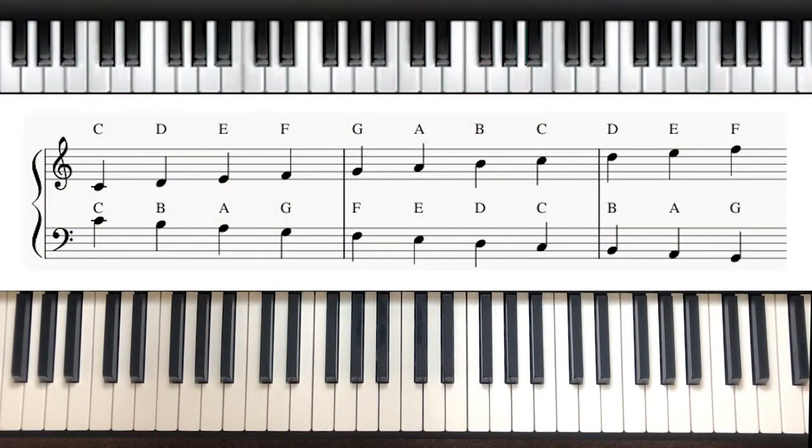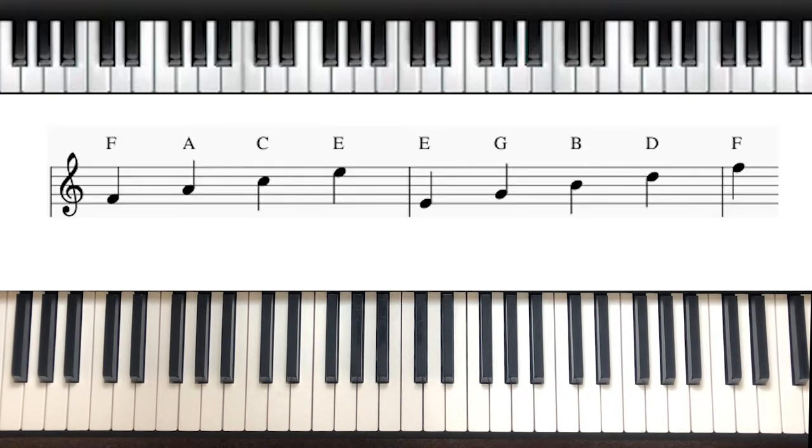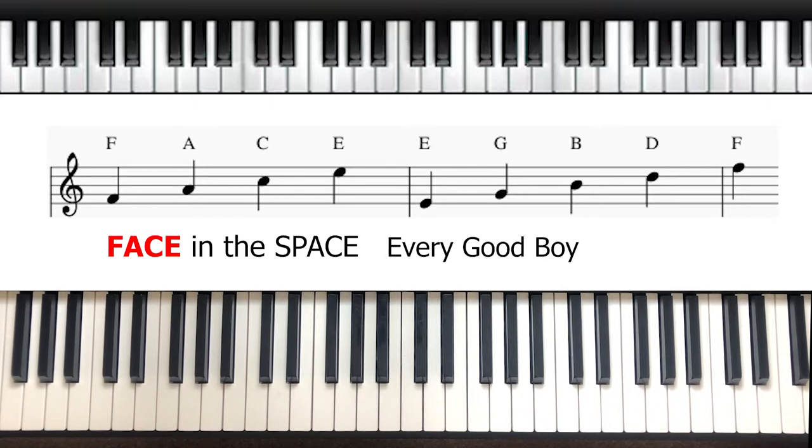By now you should know what the notes on the stave look like. On the treble clef we have FACE written in the spaces, and for the lines you can remember Every Good Boy Deserves Football.